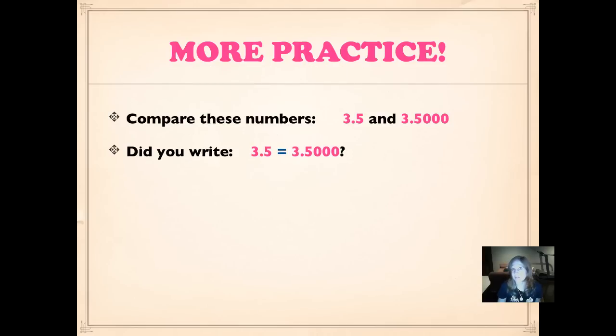Did you write three and five tenths is equal to three and five thousand ten thousandths? If you did, you got it right. You realize that the zeros that come after that five have no value. You could cross them out. You could also add zeros to the other side. Let's take a look at how we would do that now.